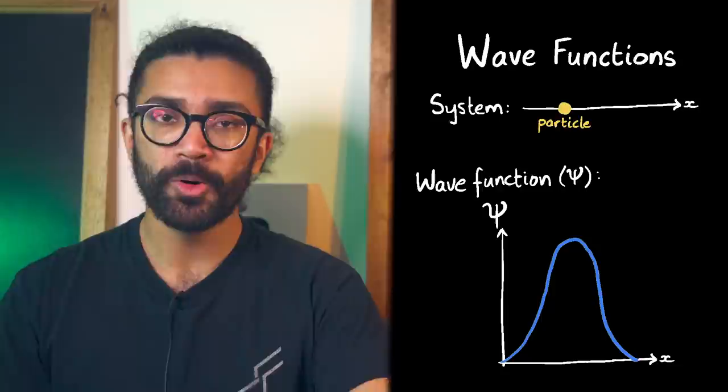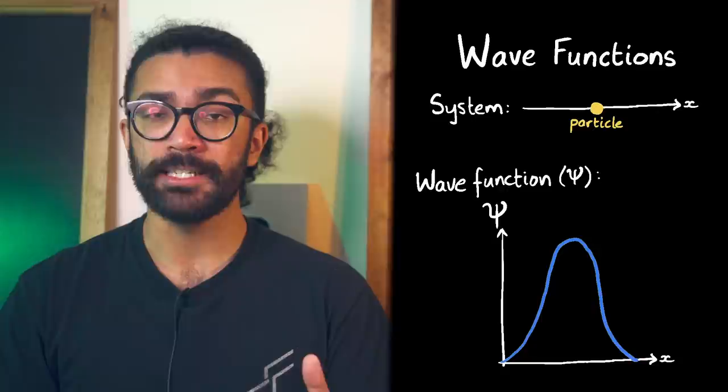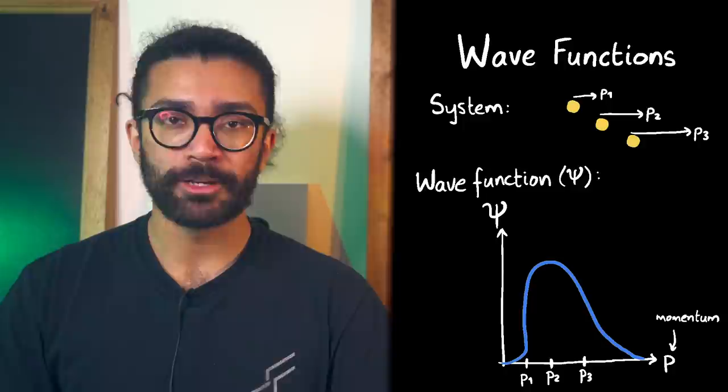Or with a simple mathematical transformation, usually not that simple, we could get the wave function to tell us the probability of finding our electron with different values of momentum. If you want to find out more about wave functions, what they are and what they do, then check out this video up here.